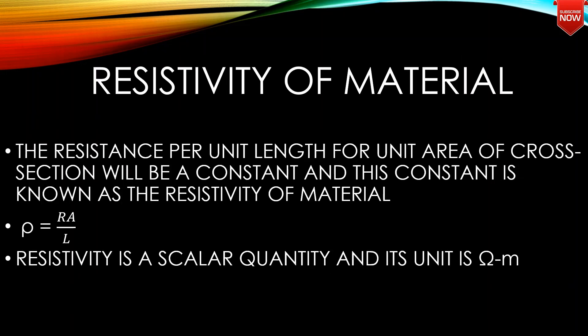Resistivity of a material: The resistance per unit length for unit area of cross-section will be a constant, and this constant is known as the resistivity of the material. Rho is equal to R times A divided by L. Resistivity is a scalar quantity and its unit is ohm meter.